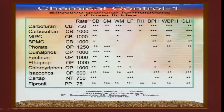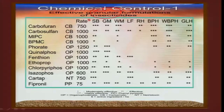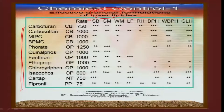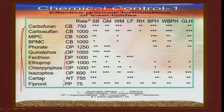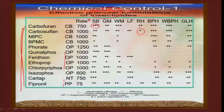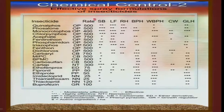Coming to the insecticidal component, granular formulations are found to be safer in the paddy ecosystem. Many granular formulations have been recommended, belonging to the carbamate group, OP group, nereistoxin group, and phenylpyrazole group. Fipronil, belonging to the phenylpyrazole group, is most effective for brown plant hoppers. The intensity of efficacy is indicated with three stars for highly effective and one star for moderate effectiveness. Based on intensity, different granular formulations can be incorporated into the IPM package.